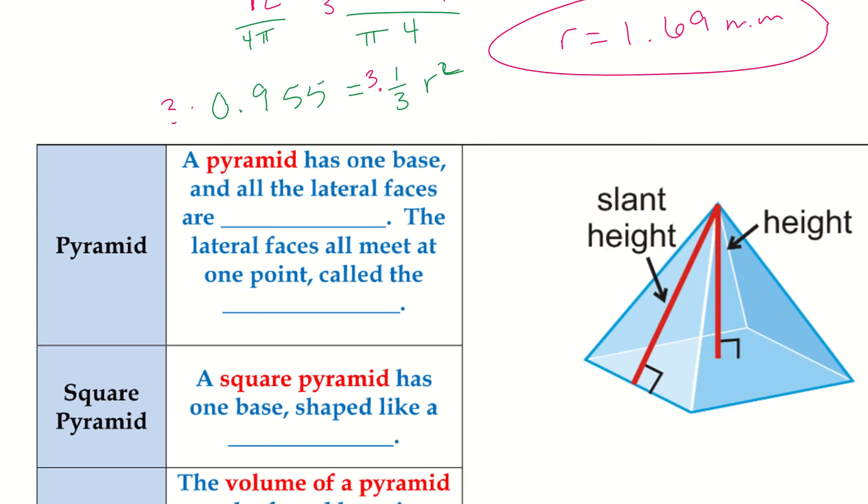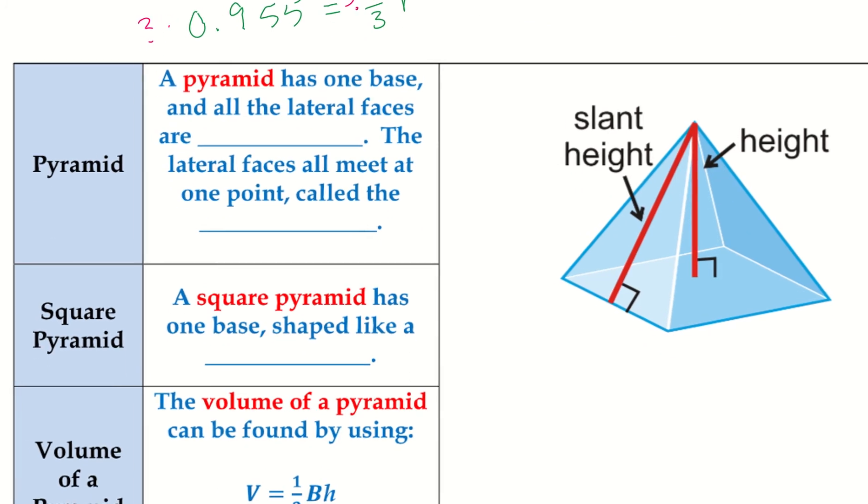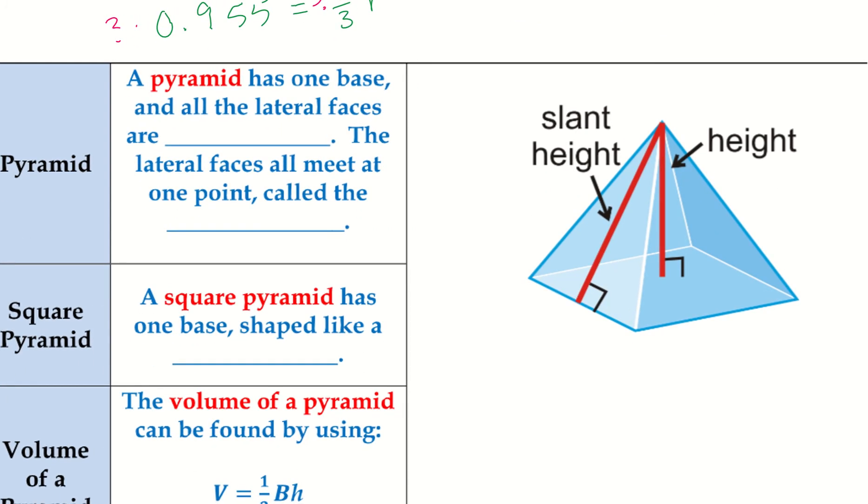All right, let's go ahead and take a look at a pyramid. So, a pyramid has one base, and all the lateral faces are triangles. The lateral faces all meet at one point, called the vertex.